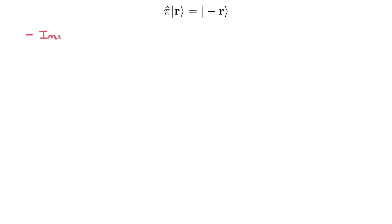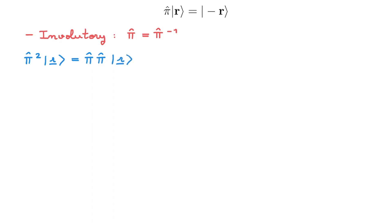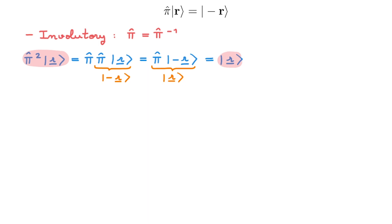The first property is that it is involuntary, meaning that it is equal to its inverse. To see this, consider the action of the parity operator squared on an arbitrary position eigenstate. We can expand pi squared: the definition of the parity operator gives the state minus r, and applying the definition again, we end up with the state r. Comparing the initial expression with the final one, we see that pi squared is equal to the identity operator, confirming that the parity operator is its own inverse. We could have guessed this by remembering that if we reflect r about the origin and then reflect it again, we get back where we started.